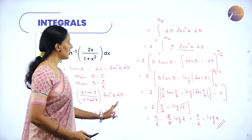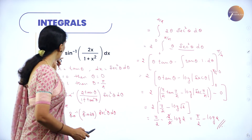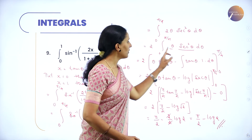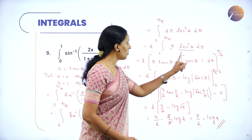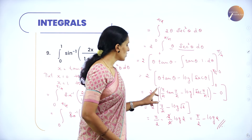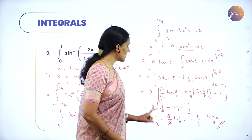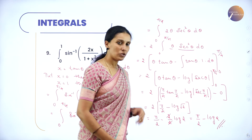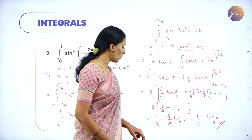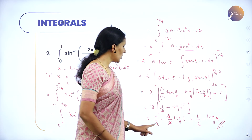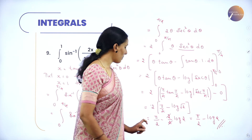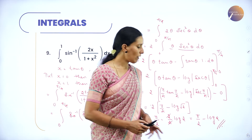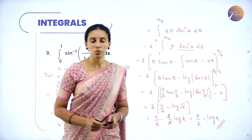By the method of substitution the integral from 0 to 1 changes to 0 to π/4. After finding the standard integral value and substituting the limits, for π/4 we get π/4 − log√2. Since log√2 = (1/2)log 2, multiplying by 2 gives π/2 − log 2. Therefore the value of the given integral is π/2 − log 2.